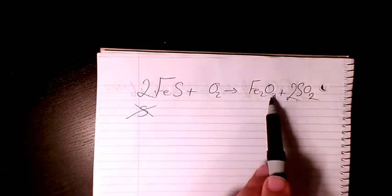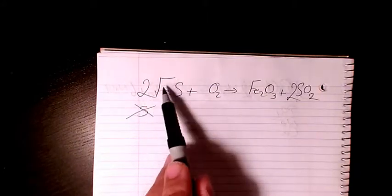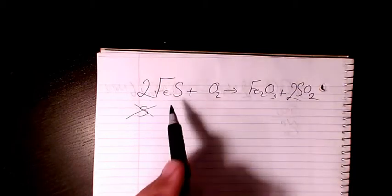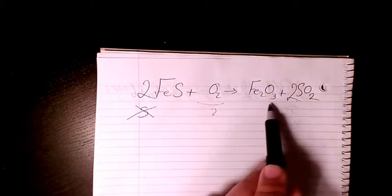So we have S is balanced, Fe is balanced. What about oxygen? Oxygen is two in this side, and in this side is three plus four.